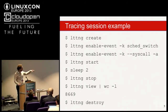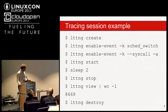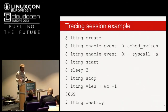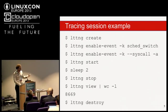Once we start the trace, we can also enable user space events if we have an instrumented application. In this example we wait two seconds, stop the trace, and view it. The view displays a text dump of the trace. We generated 8,000 events in two seconds on this laptop — it's a high-throughput tracer. When we're done, we destroy the trace session.